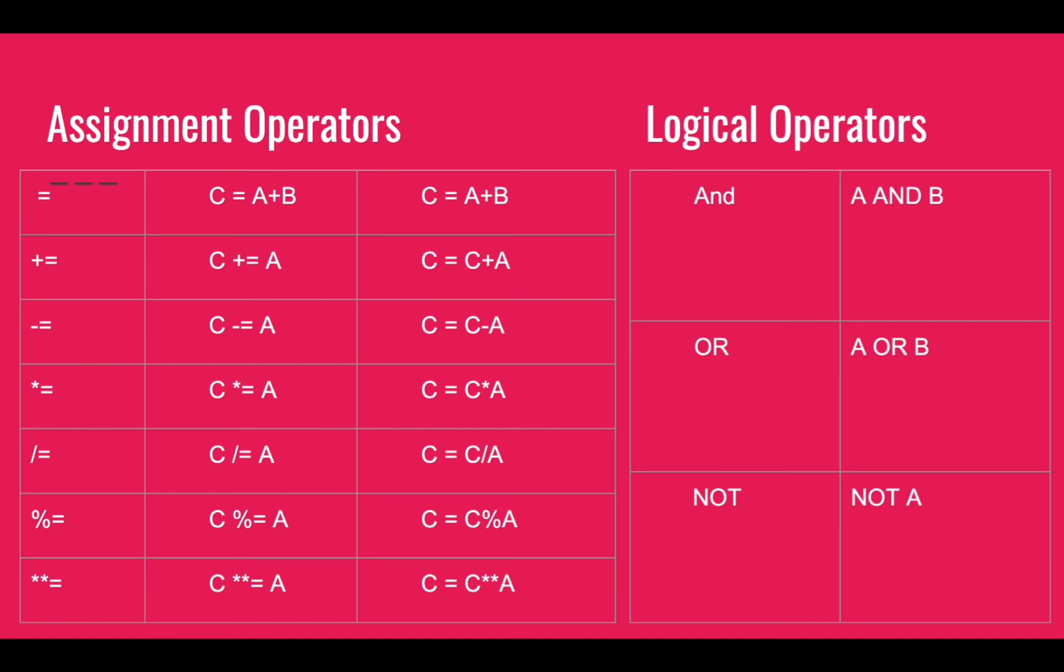Here are the assignment operators. I have listed equal to, plus equal to, minus equal to, multiplication equal to, division equal to, mod equal to, and exponent equal to. I am placing these operators in between the operands. C equal to A plus B is actually C equals to A plus B. But C plus equal to A is C equal to C plus A. Likewise, C equal to C minus A, C equal to C multiplication A, C equal to C division A, C equal to C mod A, or C equals to C exponent A. I think as we have discussed these operators in arithmetic operator as well, I am not taking any example here. I hope you can compare all the things from that side.